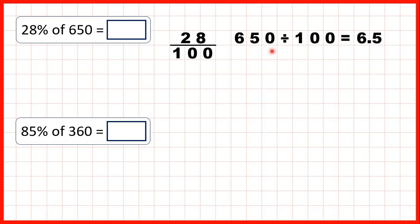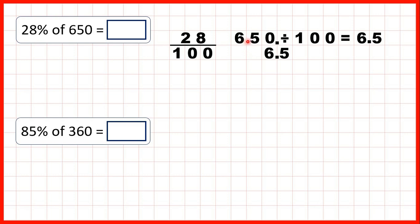That's 6.5. When dividing a whole number by 100, we can put the decimal point on the end of the number, copy down the decimal point, and because 100 has two zeros we move the digits two squares to the right. We don't need zeros on the end of decimals, so 650 divided by 100 is just 6.5. Alternatively, imagine the decimal point on the end and move it two places to the left — we get 6.50, which is just 6.5.